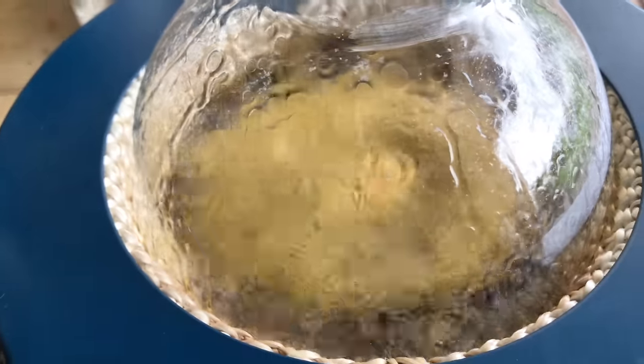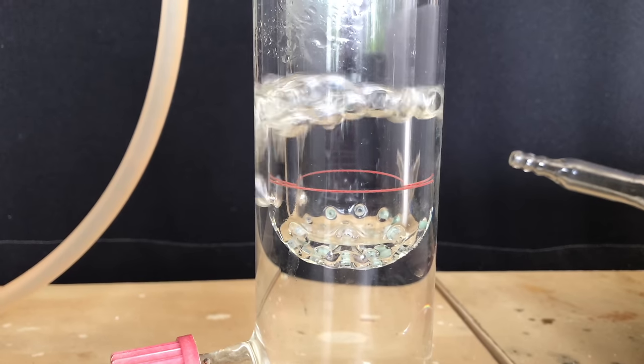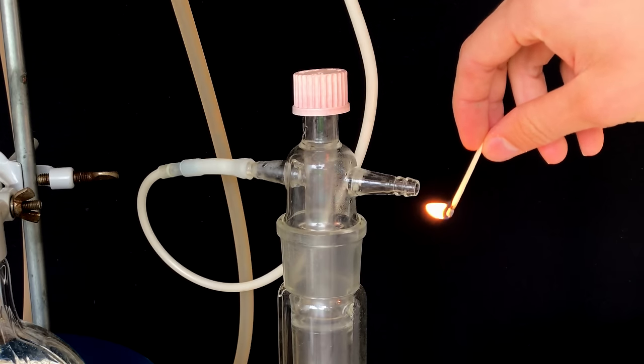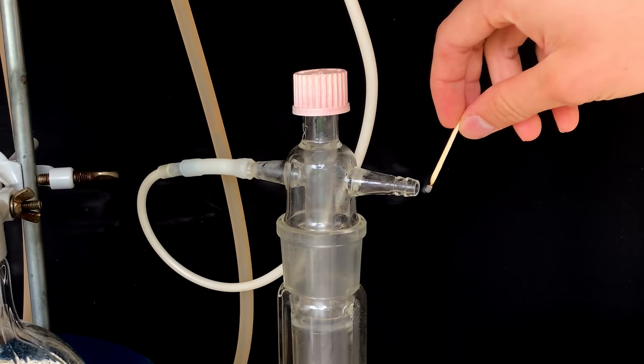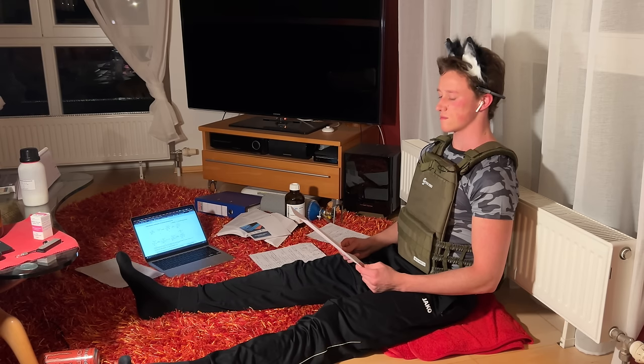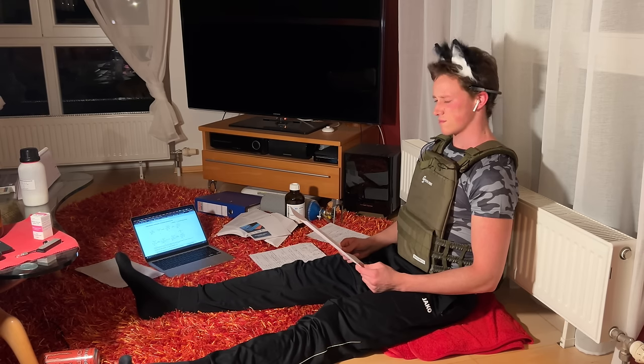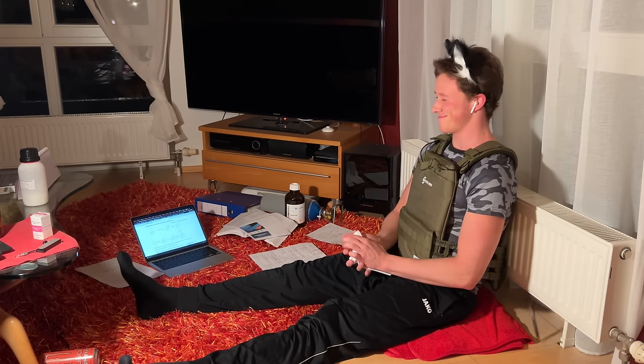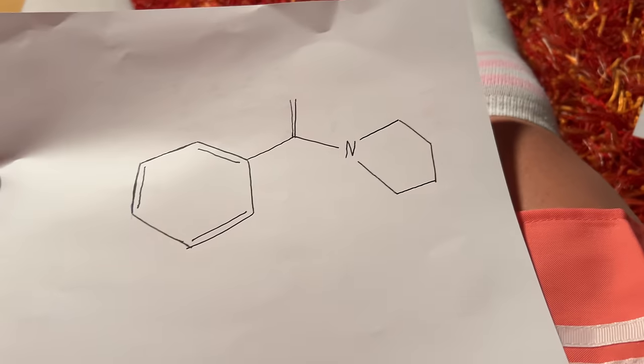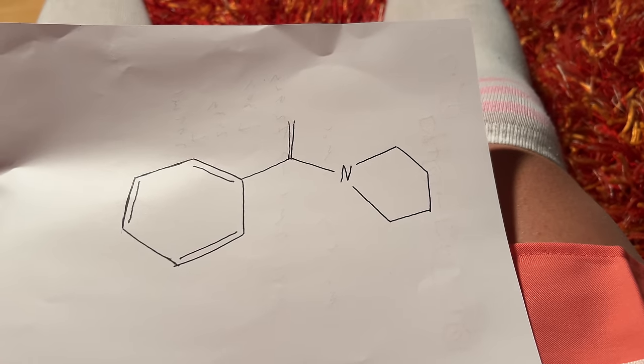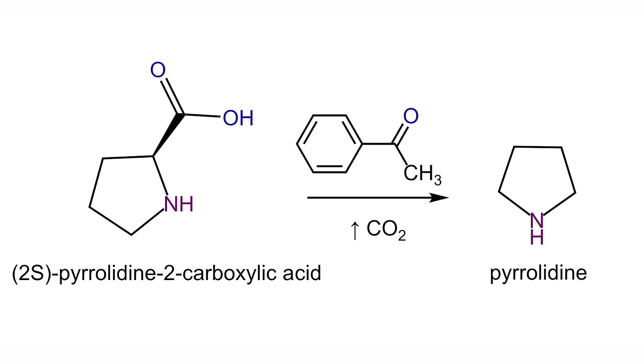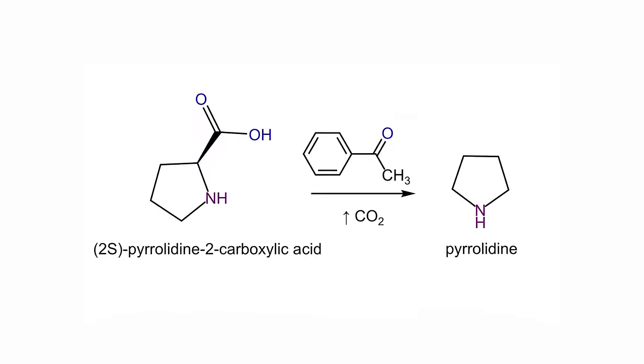At some point the reaction mixture will look like this and a rapid gas evolution takes place. The gas can easily kill fire. I am sure you know what gas this could be, but let's take a look into the reaction mechanism to confirm. I tried to figure out the mechanism for three hours, but I unfortunately failed and everything seemed unreasonable. I am however absolutely sure that it goes via enamine formation. The reaction itself is a decarboxylation, meaning carbon dioxide is split off. Acetophenone is required as a catalyst and as a high boiling solvent at the same time.